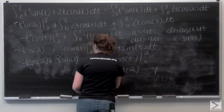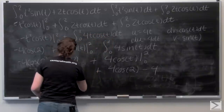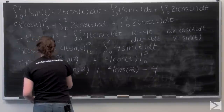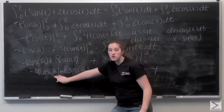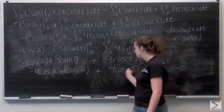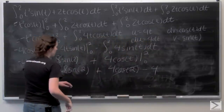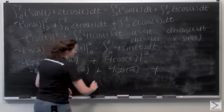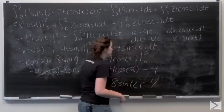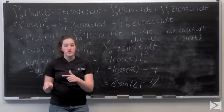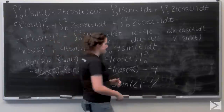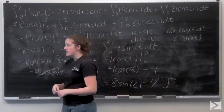Combining all these terms: the negative 4 cosine of 2 and positive 4 cosine of 2 cancel each other out. So what I'm left with is 8 sine of 2 minus 4 as my line integral. Assuming f is a force field measured in newtons and x and y are measured in meters, the answer is 8 sine(2) minus 4 joules.